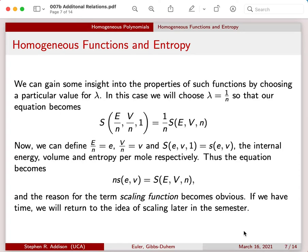We can gain some insight by choosing a particular value for lambda. What I'm going to choose is lambda to be equal to one over the number of moles. Plugging that in to our expressions with the lambdas, we have E over n, or the energy per mole, V over n, or the volume per mole, and then n over n, which is equal to one.